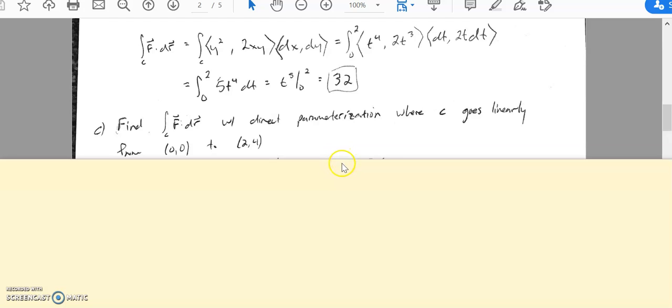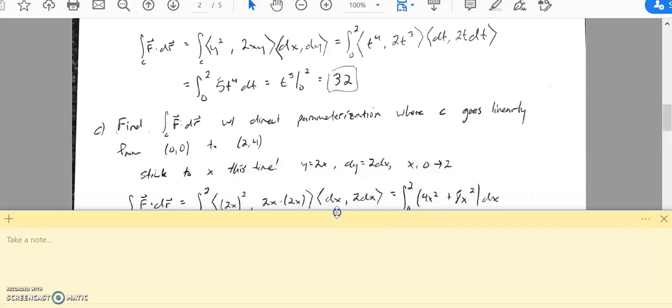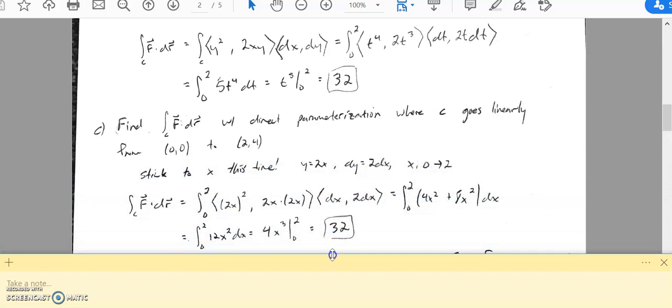So pause. Really this is like an exercise in just setting up that parameterization and making sure you're good with that. Here we go. As I said, you should get 32. Your work should be pretty similar to mine. I decided this time to just stick with x's instead of t's because I just didn't want to do t's - it's just more simple, less things to change. So y is 2x, dy is 2dx, x goes 0 to 2.